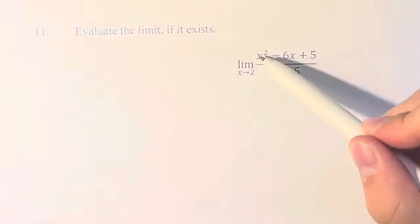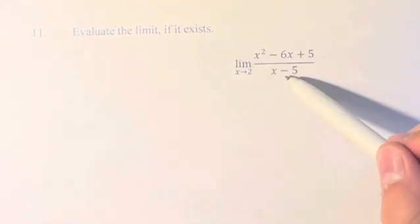So here we have the limit as x approaches 2 of x squared minus 6x plus 5 over x minus 5.